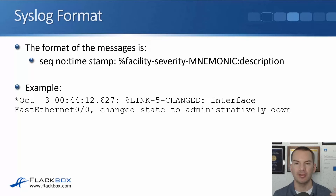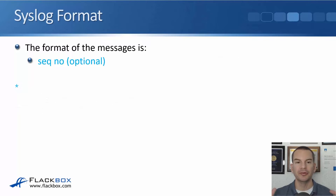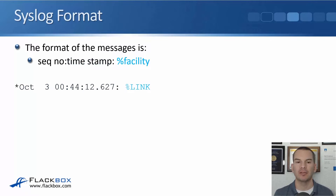There's a set format for the syslog messages and this is an industry standard that all vendors comply with. There are quite a few parameters, so let's go through them one by one. The first thing in the syslog message is an optional sequence number — in our example we don't have one set, so it's just a star. The next thing is a timestamp; from our example this event happened on October the third at about quarter to one a.m.